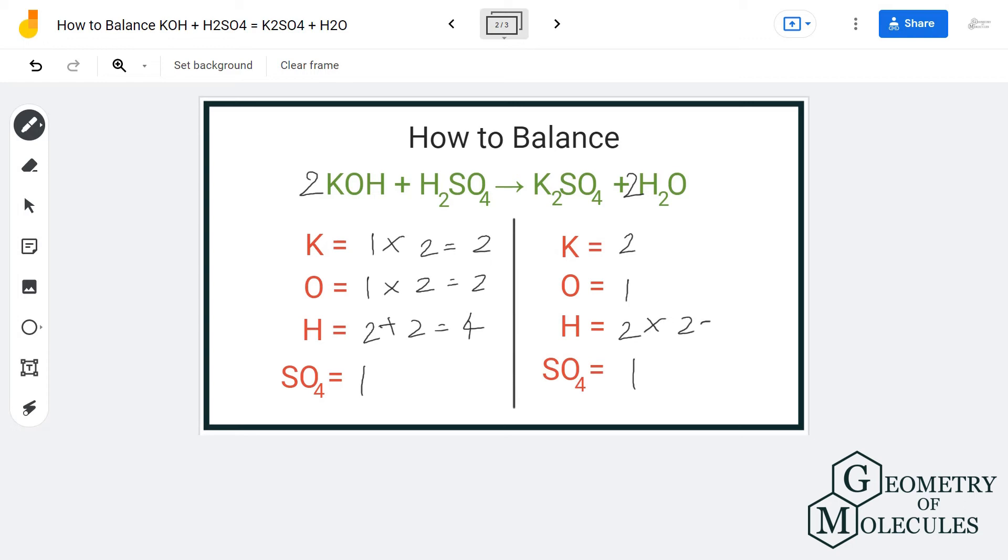So now if you look at this reaction, it is completely balanced because we have two atoms of potassium on both reactant and product side, two atoms of oxygen, four atoms of hydrogen, and one SO4 group on both sides.